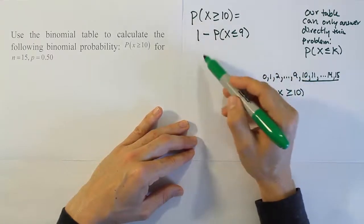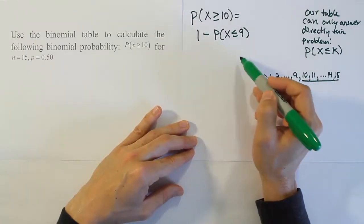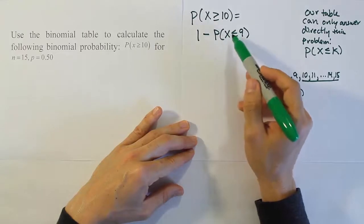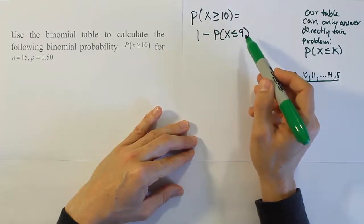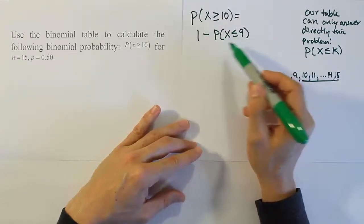So for example, if I wanted to do probability that x was greater than or equal to 14, I would do 1 minus the probability that x is less than or equal to 13. Just one number less than it. So hopefully that sinks in.